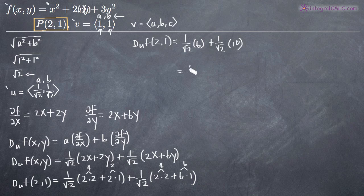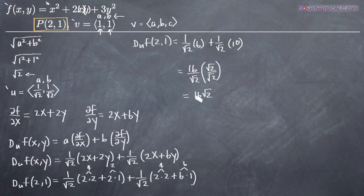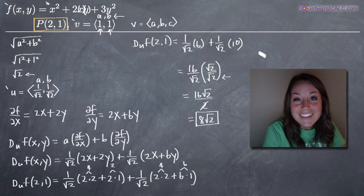We get 16/√2. It's not proper to leave a square root in the denominator of a fraction, so we multiply by √2/√2, which is just like multiplying by 1. That gives us (16√2)/(√2 × √2) = 16√2/2, and simplifying 16/2 = 8, we're left with 8√2. That is our directional derivative — the final answer. This is the directional derivative of f(x,y) at point p = (2,1) in the direction of vector (1,1). I hope that video helped and I'll see you in the next one.